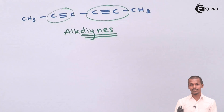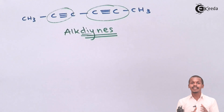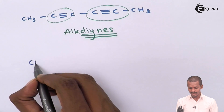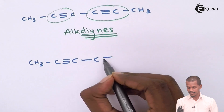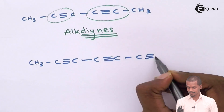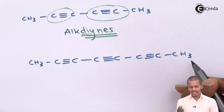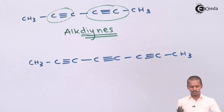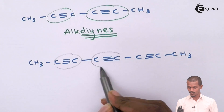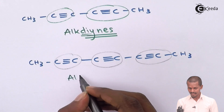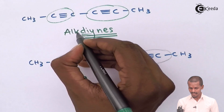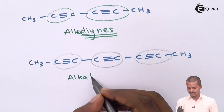Similarly, we can also have a molecule that consists of three carbon-carbon triple bonds, and that would be called an alkatriyne. The molecule shown here has three carbon-carbon triple bonds — one, two, and three — making this an alkatriyne.